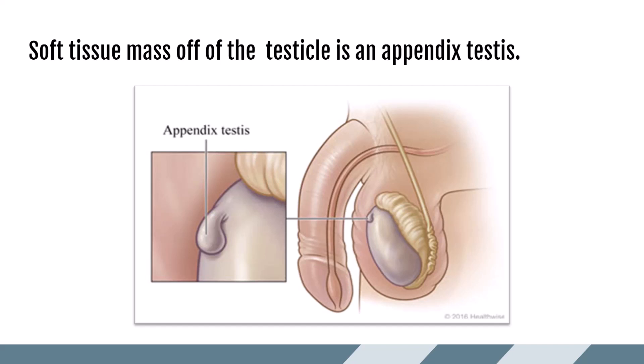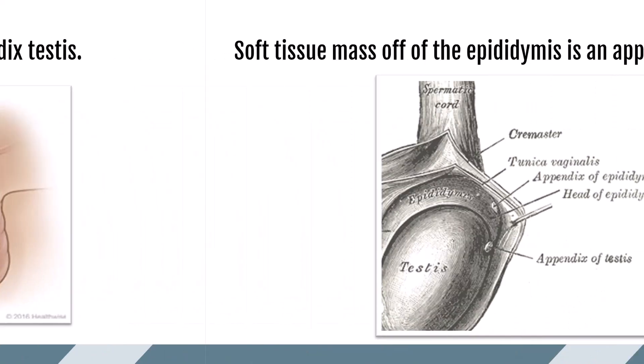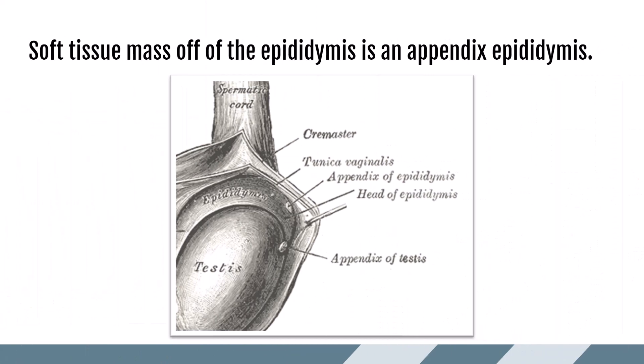They are commonly seen near the superior portion of the testicle. Similarly, the border of the epididymis is also smooth, but an epididymal appendage can occur, and this is a remnant of the Wolffian duct.